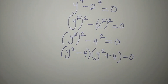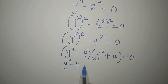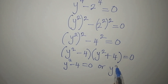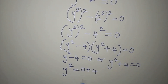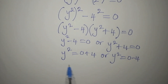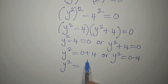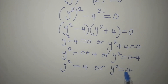We multiply these two brackets to get 0, so either of them must be 0. We can say that y-squared minus 4 equals 0, or y-squared plus 4 equals 0. Remember what the question says — get the four solutions. So y-squared equals 4, or y-squared equals negative 4.